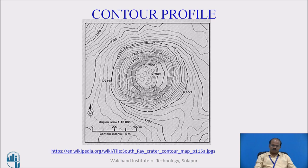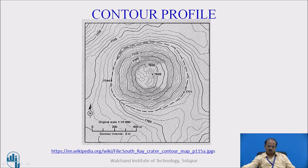So it begins from the bottom, slowly rises up to that particular circle which is drawn over there, and then in the inner portion, once again it falls down, reaches to the bottom. So it is indirectly creating a crater or a reservoir at the center.